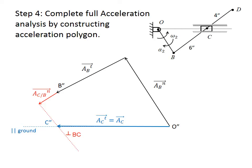Next, we find the corresponding point D' in the acceleration polygon. A useful property of the acceleration polygon is that each point in the mechanism has a corresponding point on the polygon. The ratio BC over BD in the actual mechanism equals the ratio B'C' over B'D' in the acceleration polygon.